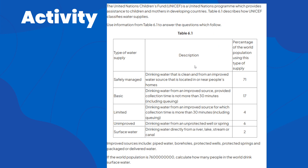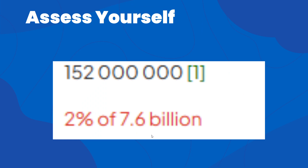This is a brief activity. UNICEF — the United Nations Children's Fund — is a United Nations program which provides assistance to children and mothers in developing countries. Table 6.1 describes how UNICEF classifies water supplies, covering improved water sources. If the world population is 7.6 billion, calculate how many people drink surface water. Surface water accounts for 2%, so 2% of 7.6 billion gives an answer of 152 million.